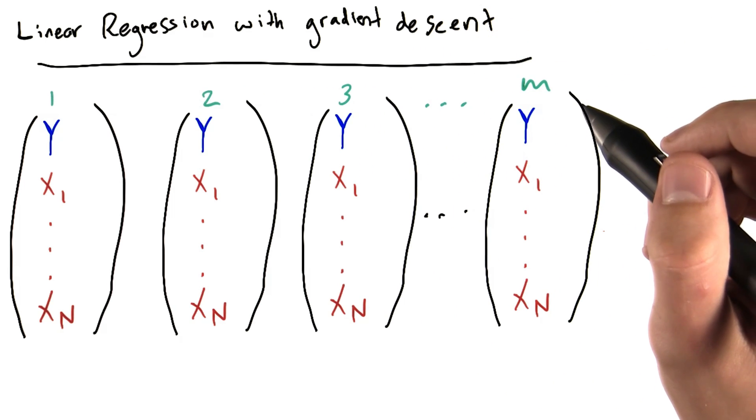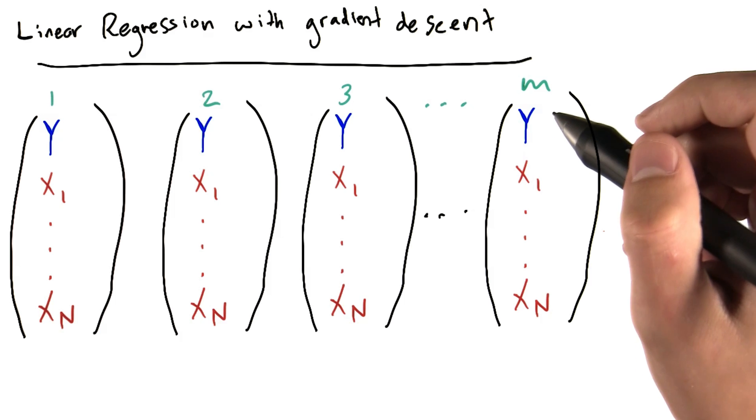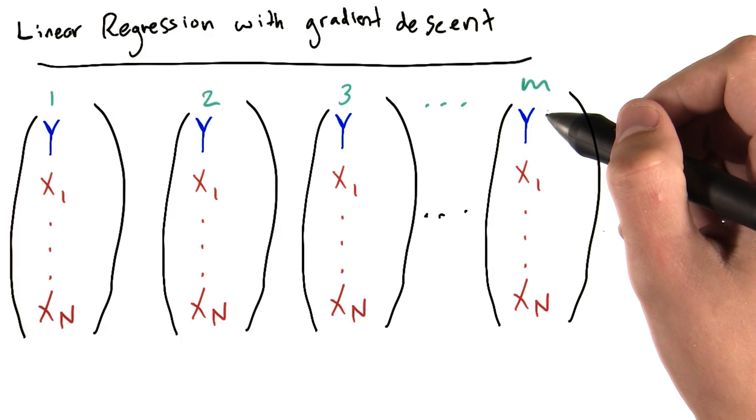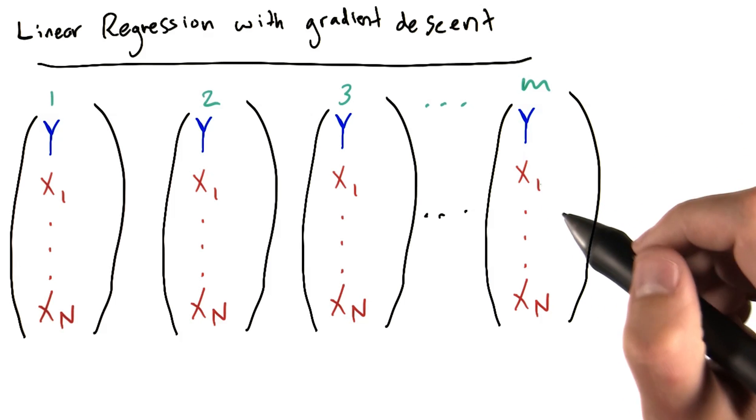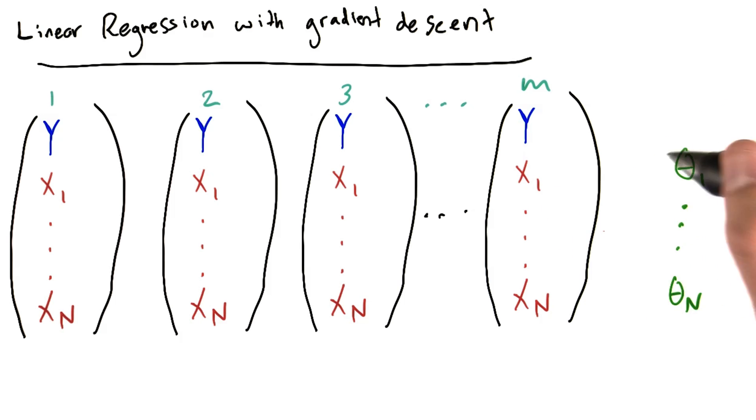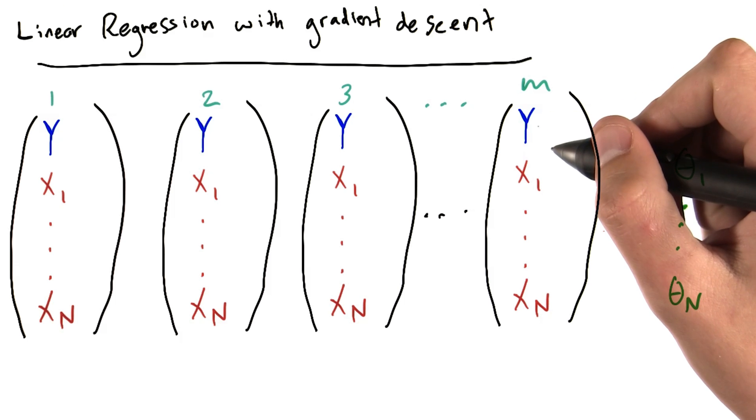Generally speaking, we are trying to predict the values of the output variable for each data point by multiplying the input variables by some set of coefficients that we're going to call theta 1 through theta n. Each theta, which we'll from here on out call the parameters or the weights of the model, tell us how important an input variable is when predicting a value for the output variable.